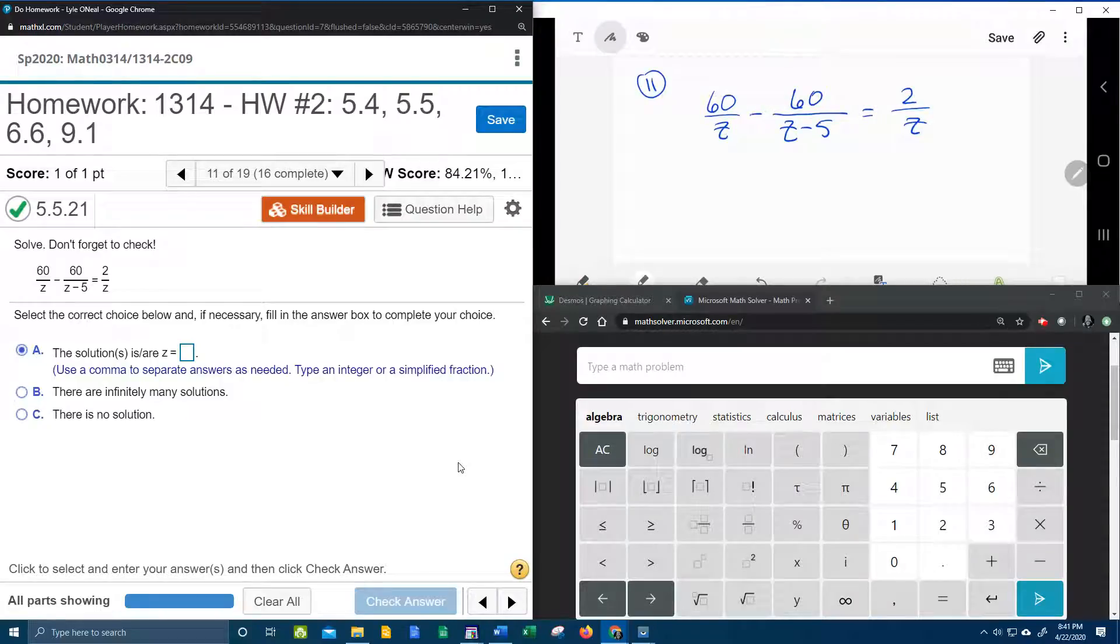Alright here we go, question number 11 from our college algebra homework number 2 in MyLab Math. We have another rational equation that we're going to have to solve for z, so I've got that written down up here. Let's get started.